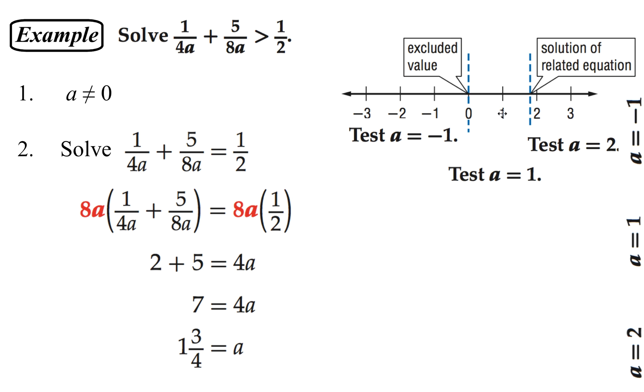And we're going to test solutions in each of these sections. So on the left of 0, let's try negative 1. Between 0 and 1 and 3 fourths, let's try 1. That's an easy value. And on the right-hand side, let's test A equals 2.